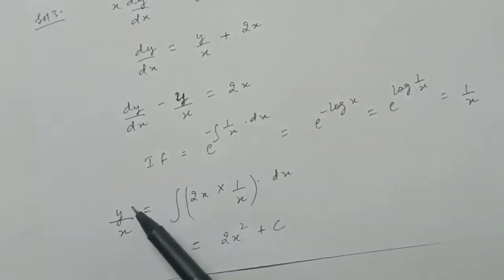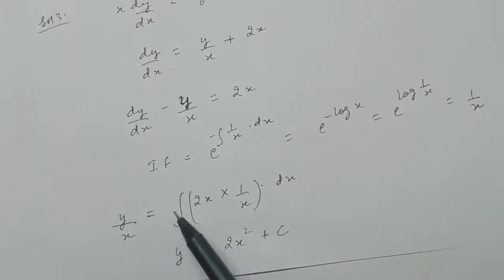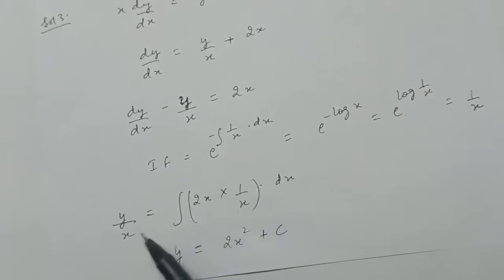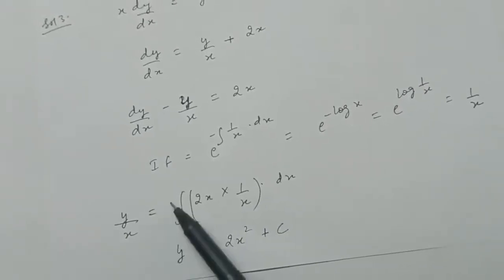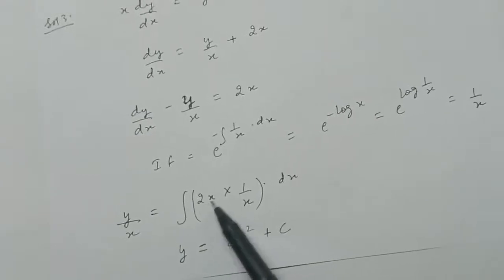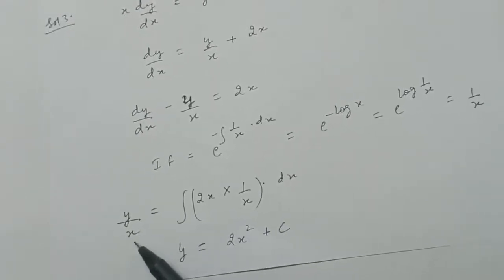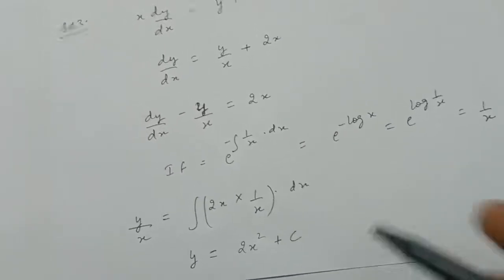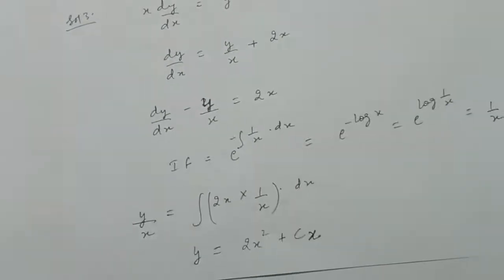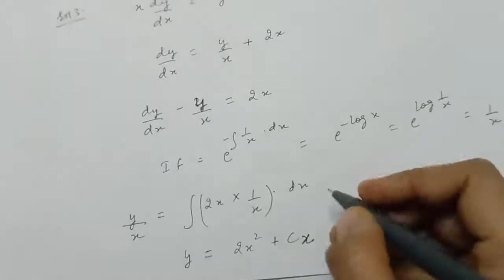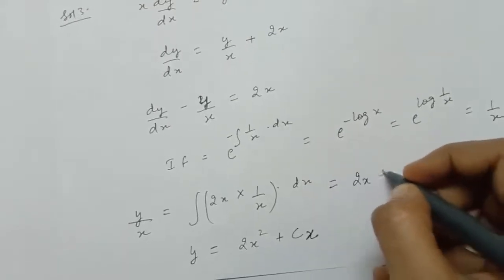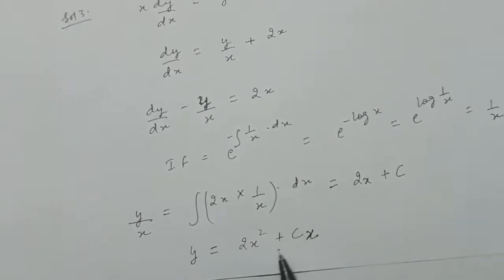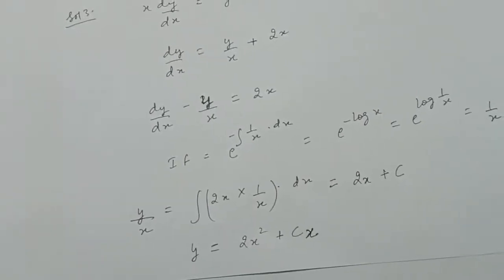The solution is y times the integrating factor equal to the integral of Q times the integrating factor. So y times 1/x equals integral of 2x times 1/x, which simplifies after the x cancels to integral of 2, giving 2x. Multiplying through by x gives the final solution y equal to 2x squared plus cx.